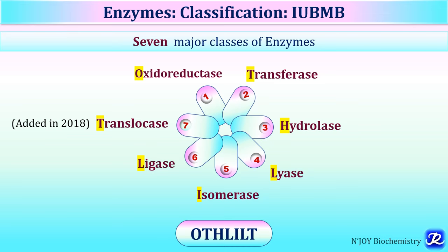These 7 classes can be remembered by the mnemonic 'Othlyle T': O for oxidoreductases, T for transferases, H for hydrolases, L for lyases, then isomerases, ligases, and lastly translocases.